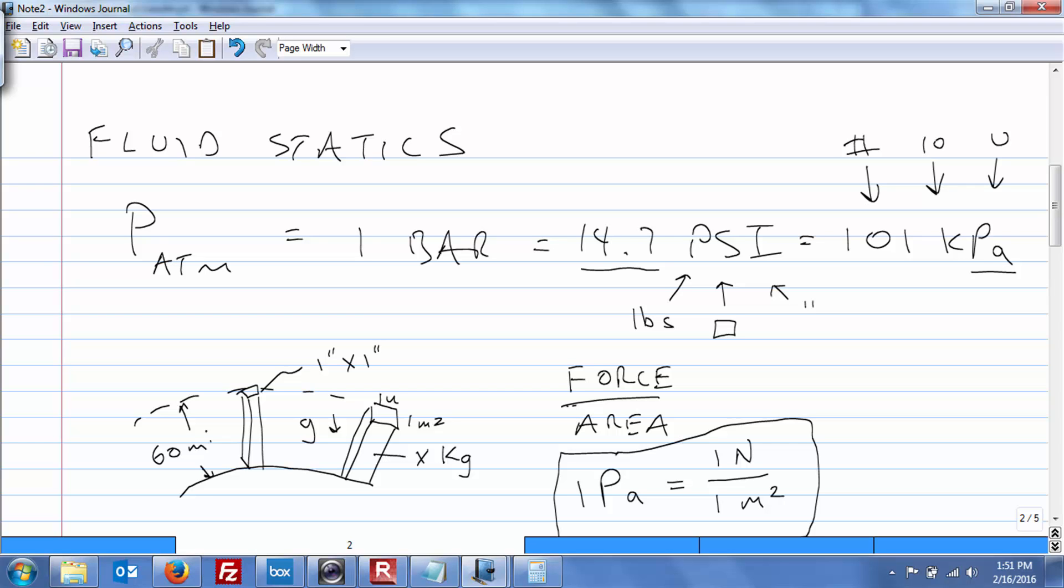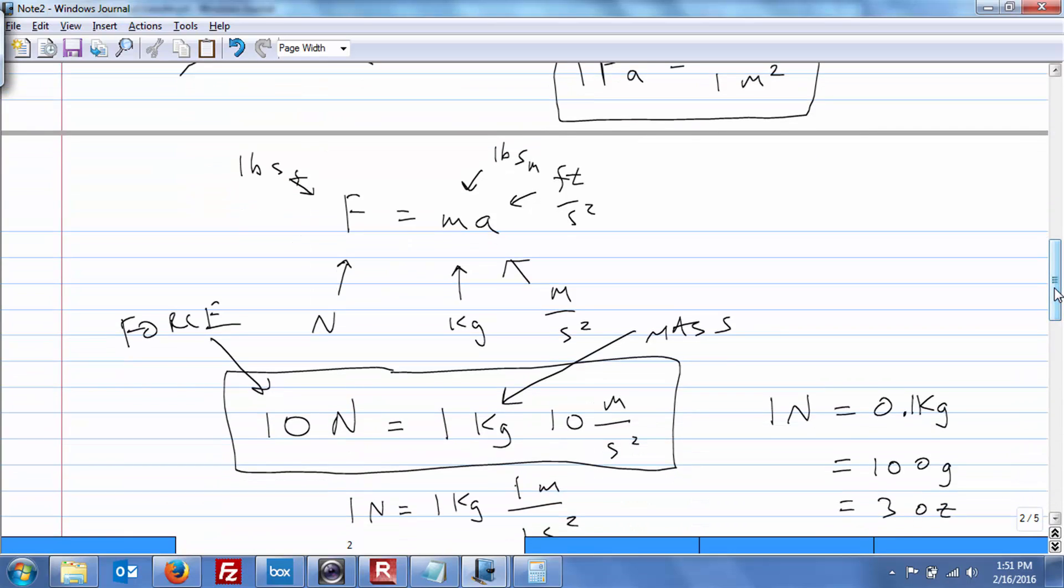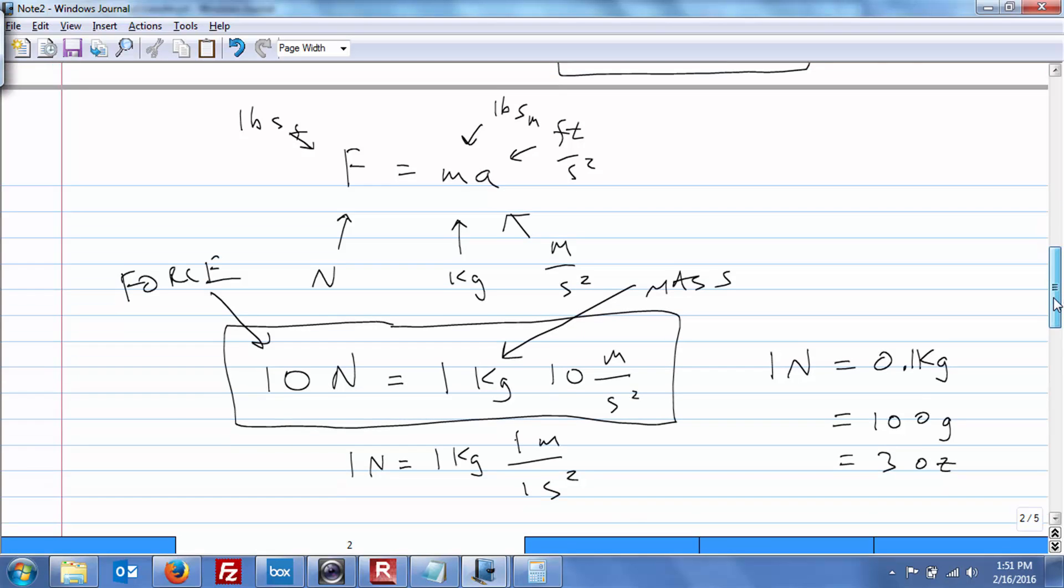So that's where the 14.7 comes from, and we agreed that there's 14.7 pounds of air above the one inch square, wherever you happen to be on Earth. But now getting into the SI units, we introduced what a Pascal was. I said it's one newton per square meter.